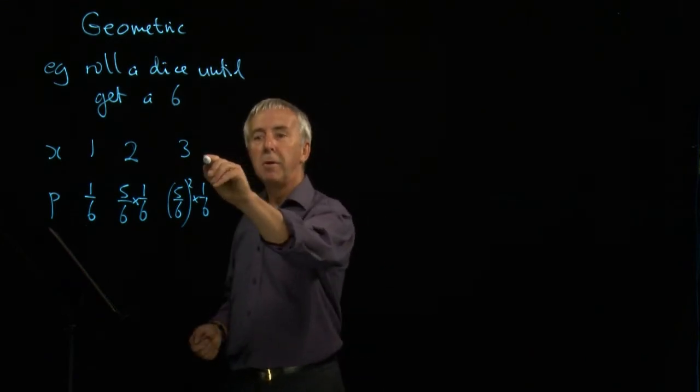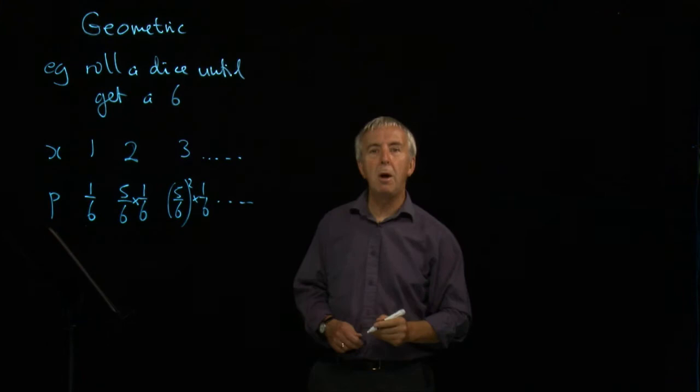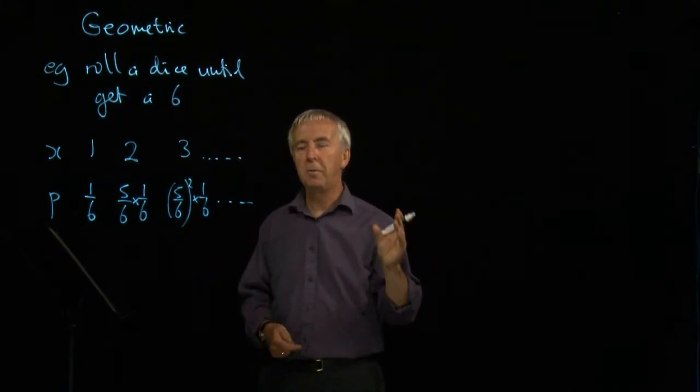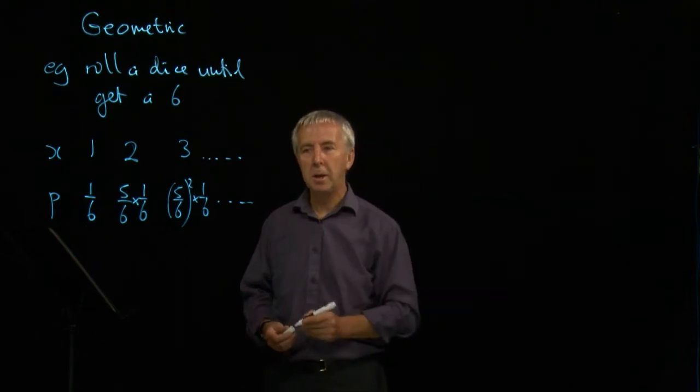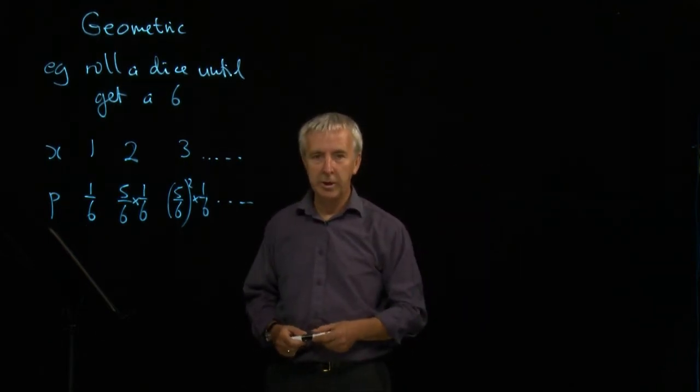This is going to go on forever. Potentially, you could take a hundred rolls of the dice until you get a six. There is no strict cut-off. Obviously it becomes extremely unlikely, but in principle you can go on to a million before you've got your first six. It could happen.